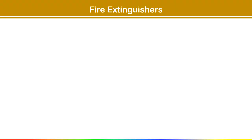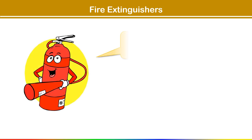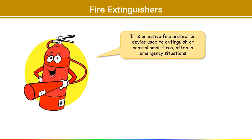The first topic is fire extinguisher. A fire extinguisher is an active fire protection device used to extinguish or control small fires, often in emergency situations. Active fire protection is a group of systems that require some amount of action or motion in order to work efficiently in the event of a fire. Action may be manually operated or automatic.